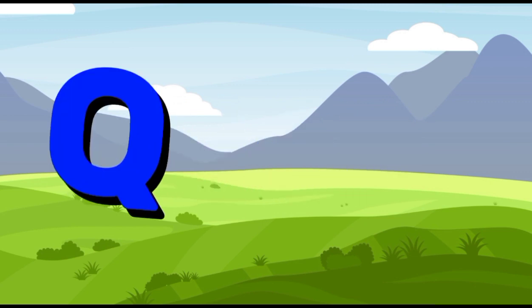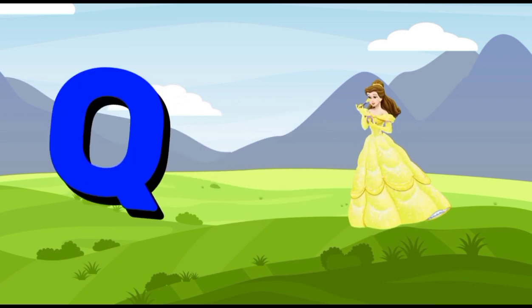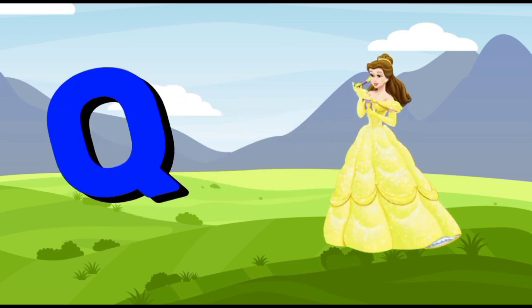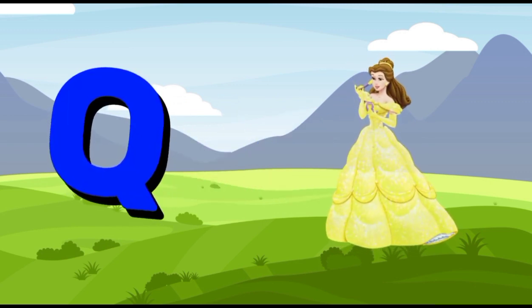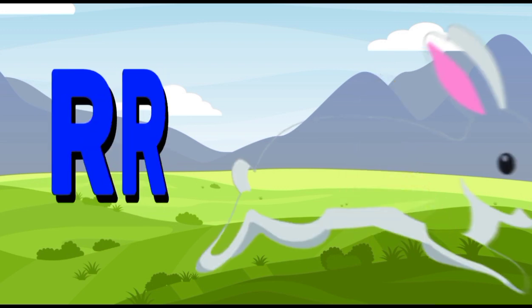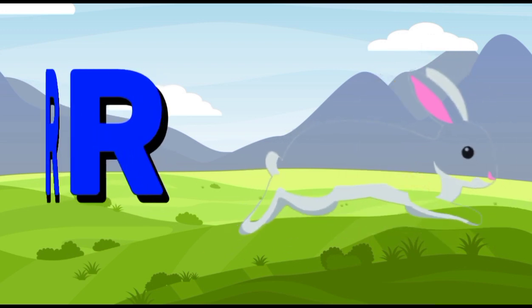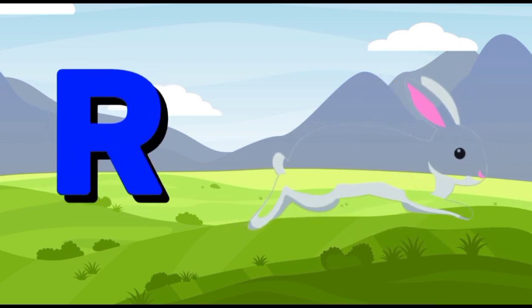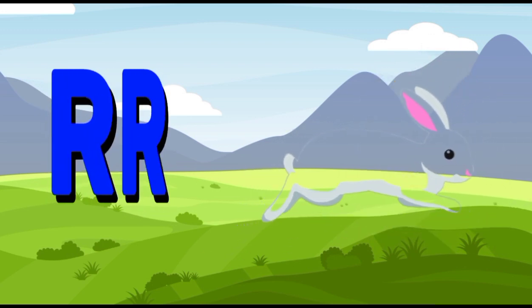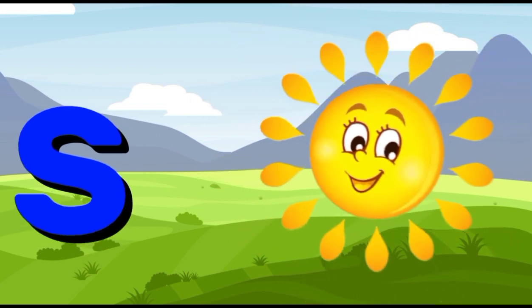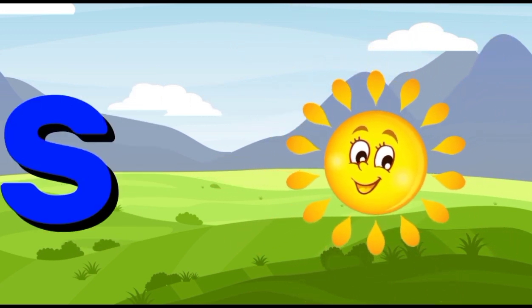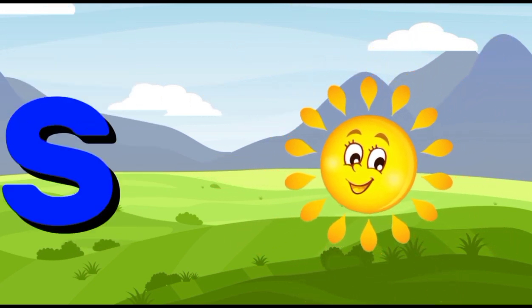Q is for queen, k-k-queen. R is for rabbit, r-r-rabbit. S is for sun, s-s-sun.